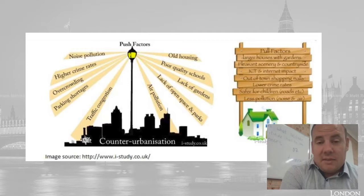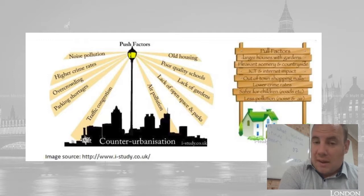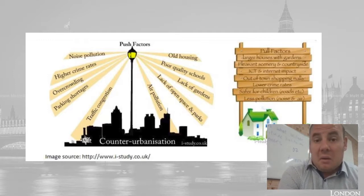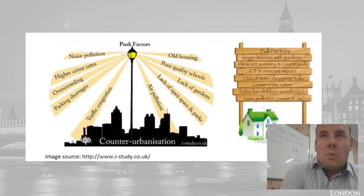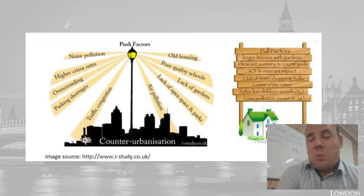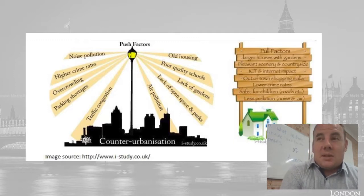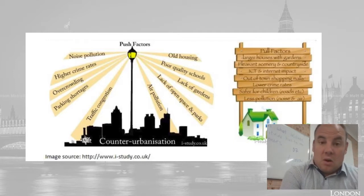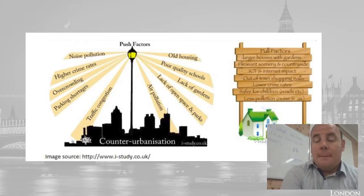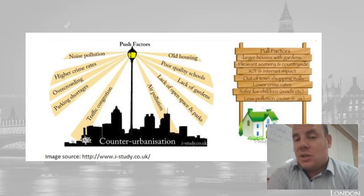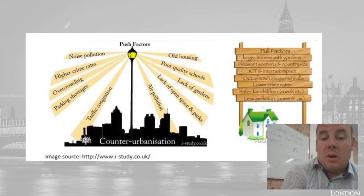Examples are quite tricky, particularly around Sydney, because Sydney has grown dramatically over the last 50 to 60 years and the Central Coast is now sort of part of Greater Sydney. Counter-urbanization would probably occur in areas like Jillabee. It's similar to ex-urbanization, where people commute from rural places like Jillabee down to Sydney.